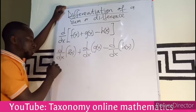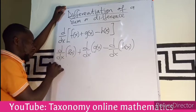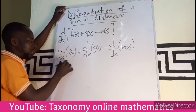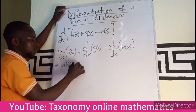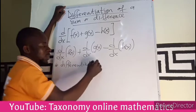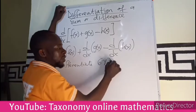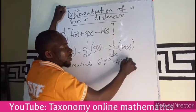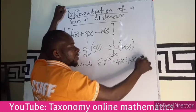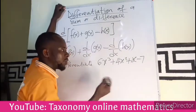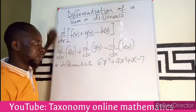So if for example I am asked to differentiate, let's say, 6x³ + 4x² + x - 7 with respect to x, what it means is that my dy/dx is just going to be...